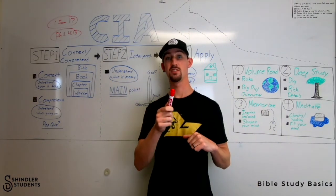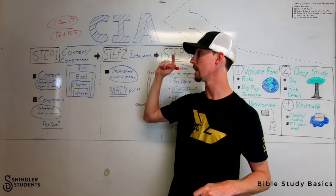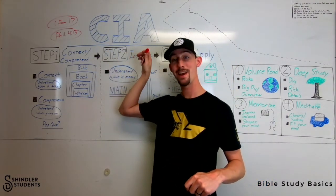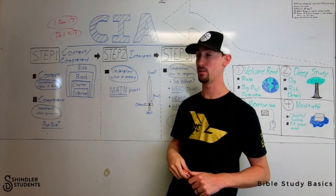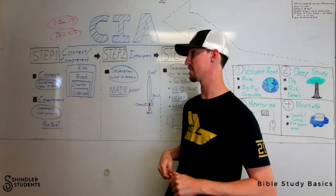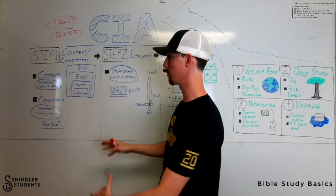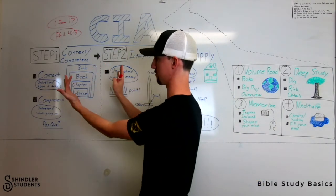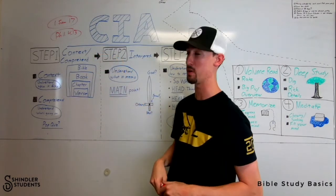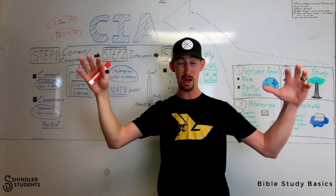So step one in looking at this passage is CIA — context and comprehend. We want to understand what's going on around it and then what's going on within the text itself. If we look at the context, remember we're trying to see on all these layers how it's fitting in with the story.